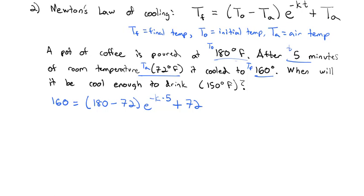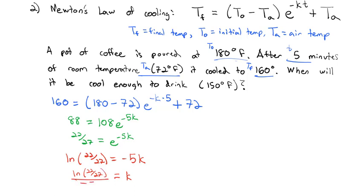Dividing both sides by 108 and reducing, we get 22 over 27 equals e to the negative 5k. To get at the exponent, we take the natural log of both sides. So k, our constant, is the natural log of 22 over 27 divided by negative 5.